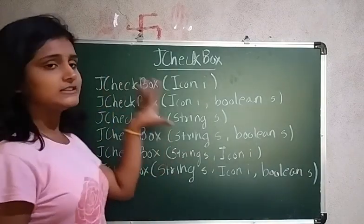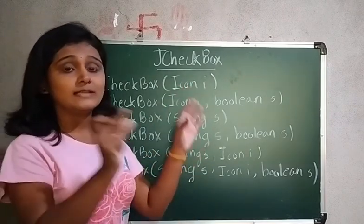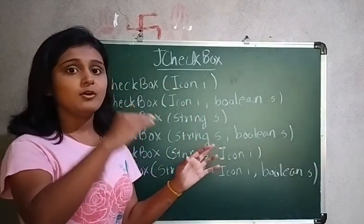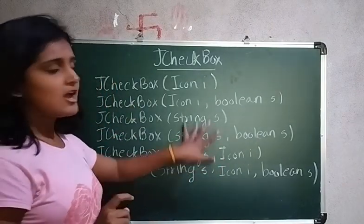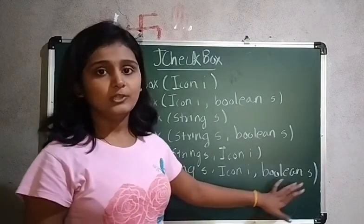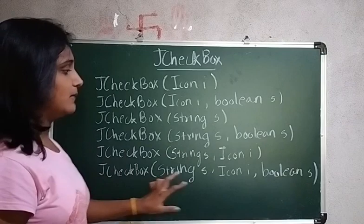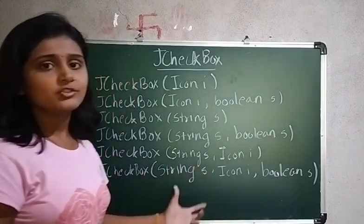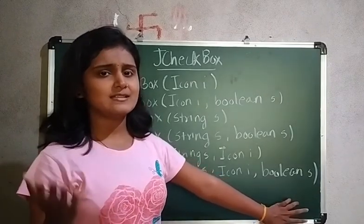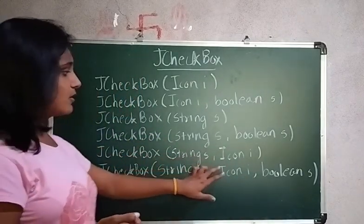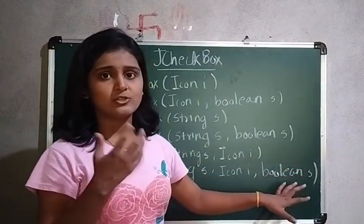Here you can pass the string, icon, and the boolean state — specifying exactly what the initial state should be. This covers the JCheckBox constructors. As per your requirement you can choose the appropriate constructor. Most of the time we apply the JCheckBox constructor with string, icon, and boolean status. If you don't want to specify the status, the default state will apply.